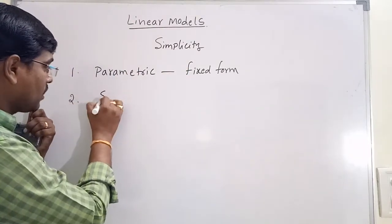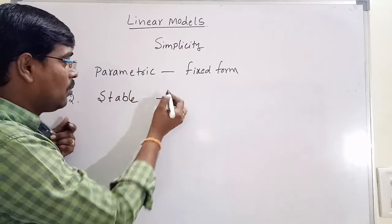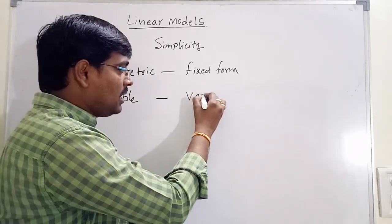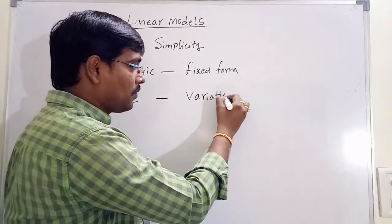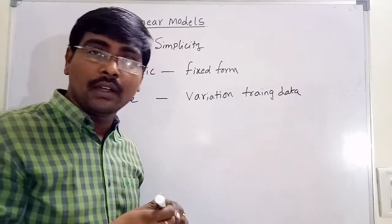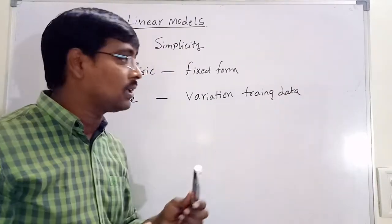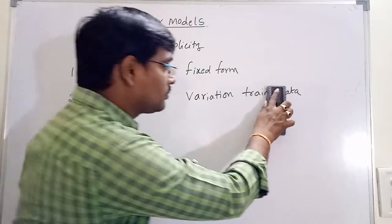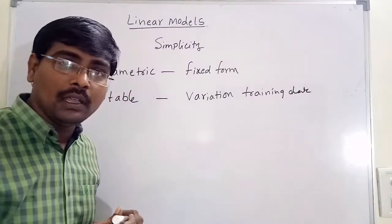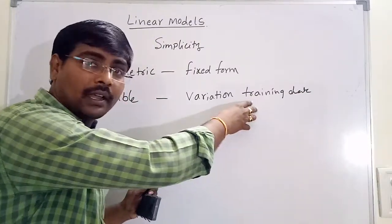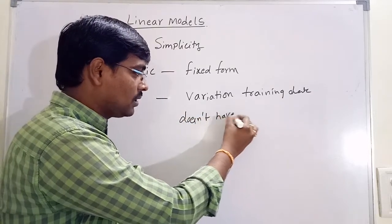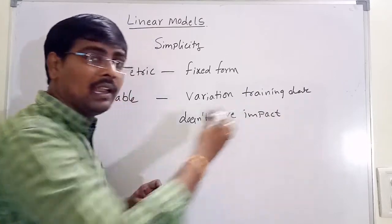The second point is that linear models are stable. Stable means suppose if you perform any variations on the training data — you already know training data and testing data, and our models are constructed based on the training data — if you perform any variations in the training data, it does not have an impact on the learning model.